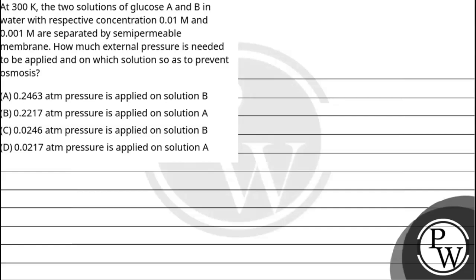Hello, let's read the question. The question says at 300 Kelvin, two solutions of glucose A and B in water with respective concentrations 0.01 molar and 0.001 molar are separated by semipermeable membrane.